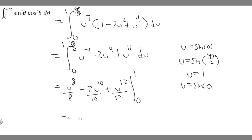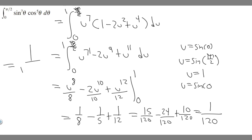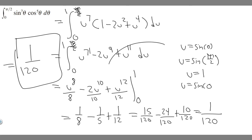Plugging in u = 1: we get 1/8 − 2/10 + 1/12, which simplifies to 1/8 − 1/5 + 1/12. Converting to a common denominator of 120: 15/120 − 24/120 + 10/120 = 1/120. So the answer to this problem is 1/120.